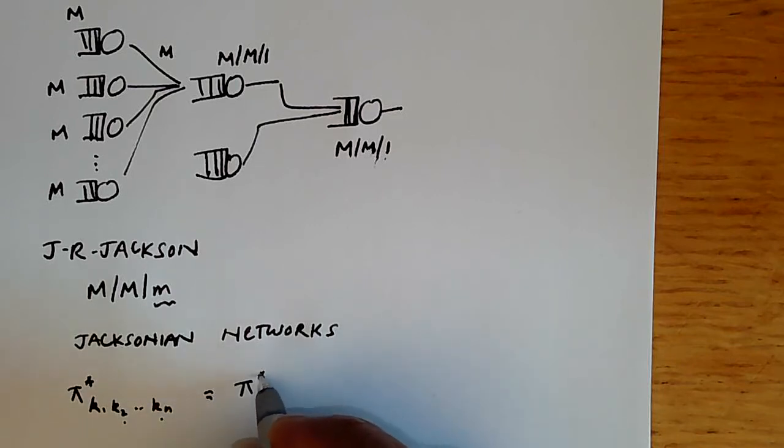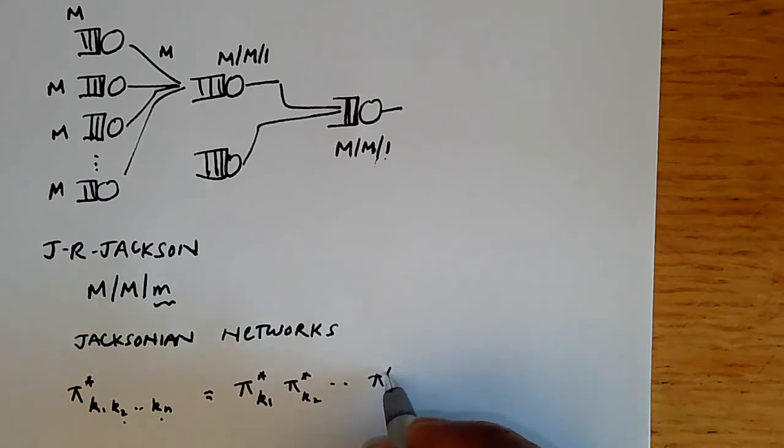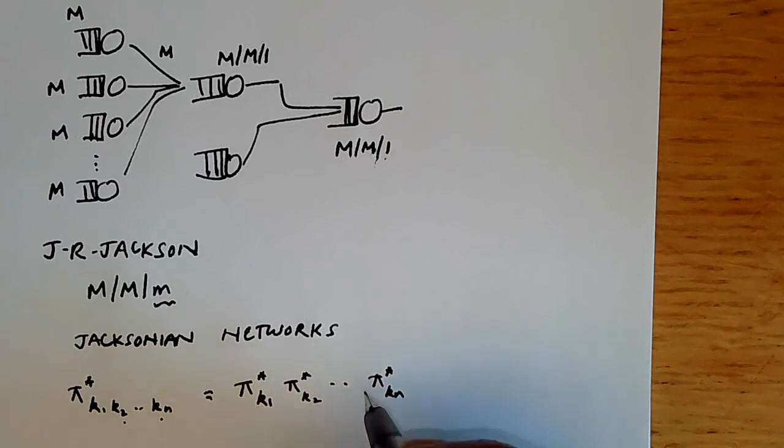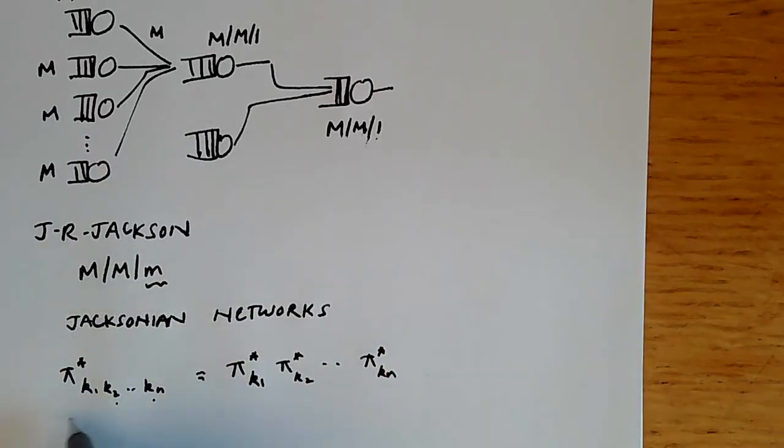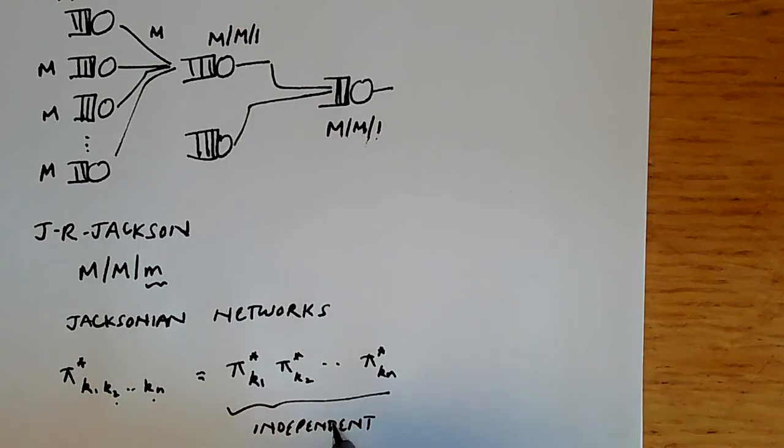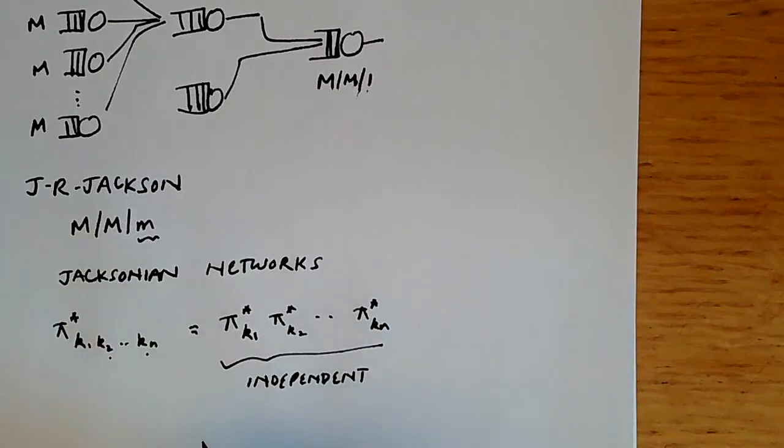What he showed was that this is exactly the probability of k₁ in the first multiplied by k₂ in the second multiplied by all the way to kₙ at the end. In other words, this joint probability is the product of the individual probabilities, and so these act as if they're independent of each other. This Poisson arrival process allows these queues to be decoupled, and this is what's called a product form. This is a great result and one would wish you could use it.